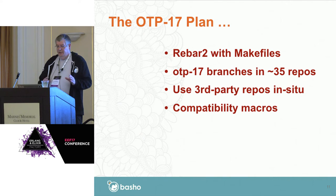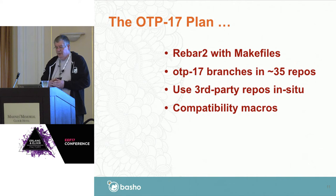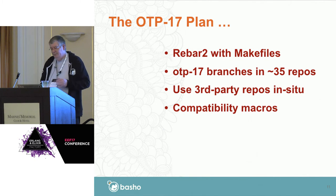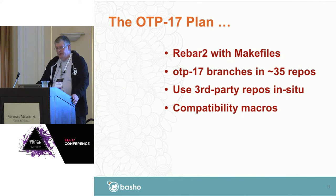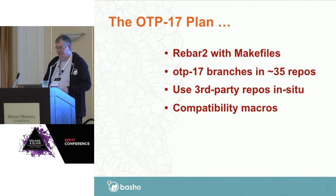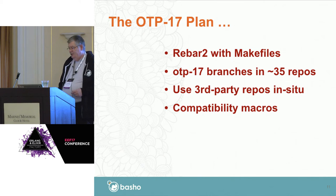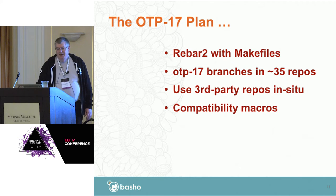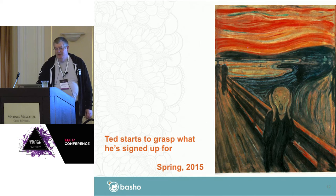I took on the task in the winter of 2015 and wound up creating OTP 17 branches in dozens of repositories. We attempted to use third-party repos where they sat — if we were using somebody else's repo, we didn't fork it, we tried to use it directly. The theory was that if somebody makes a fix in their repo, we want to pull that in. We tried to work around issues as they came up with compatibility macros, like the namespace-type macro you've seen everywhere, and the leftover R15 crypto compatibility, because that API changed in R16. I started to realize maybe it was a bigger task than we originally thought.